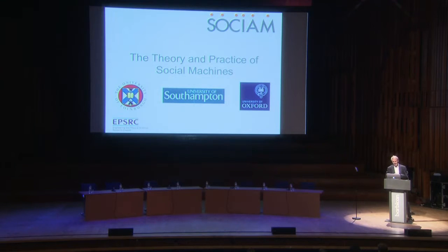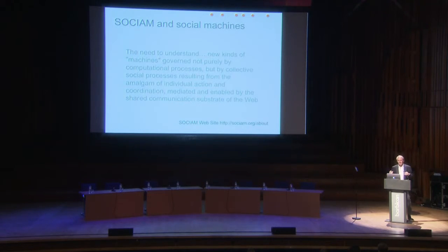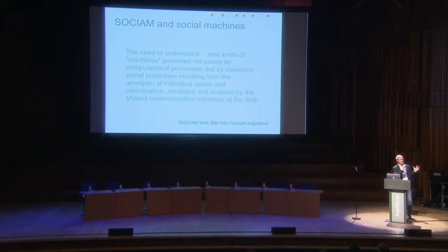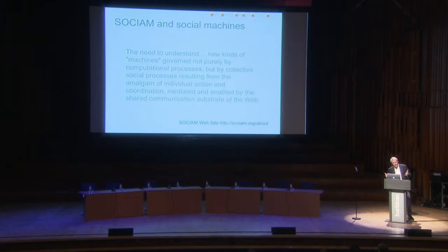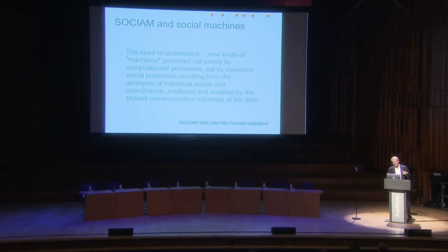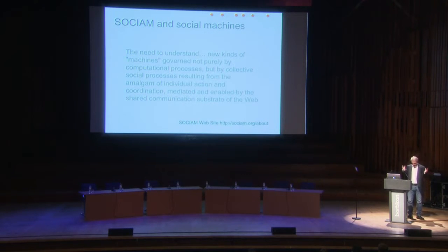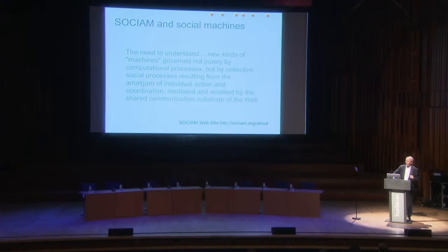Our characterization of social machines is to recognize that they are not governed by pure algorithms or formal specifications that computer scientists have traditionally written, but by collective social processes. They're some kind of amalgam of individual action and coordination, and the web infrastructure mediates that. This is interesting because we can begin to develop a checklist of their properties.